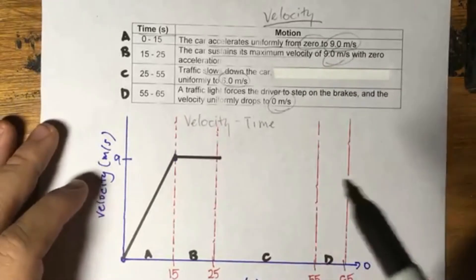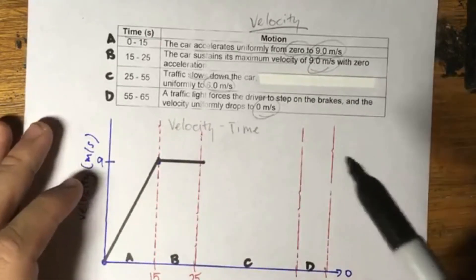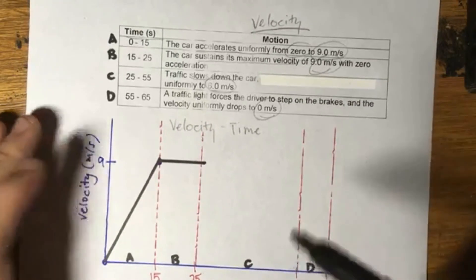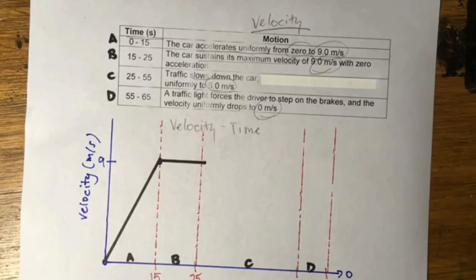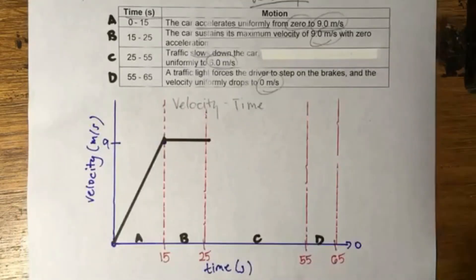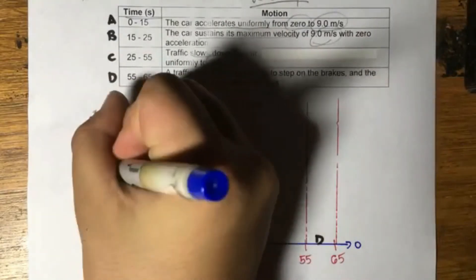So 25 to 55, traffic slows the car down uniformly to 6 meters per second. So for that long period of 30 seconds, the car is slowing down to 6. So first things first, I'm going to label 6 meters per second in my graph.